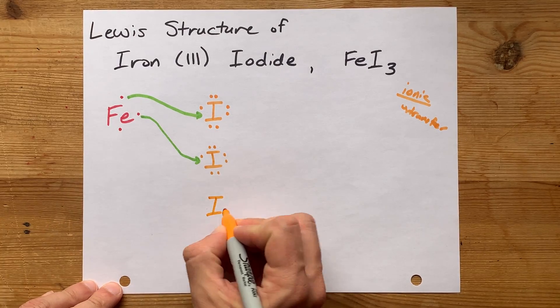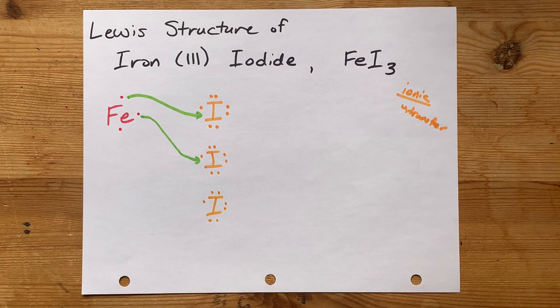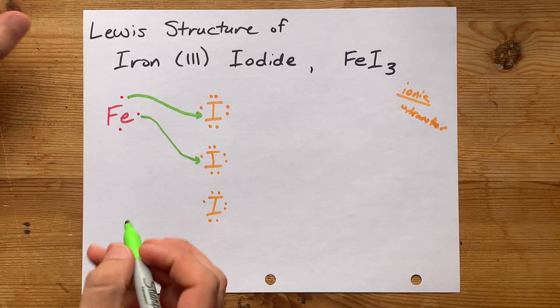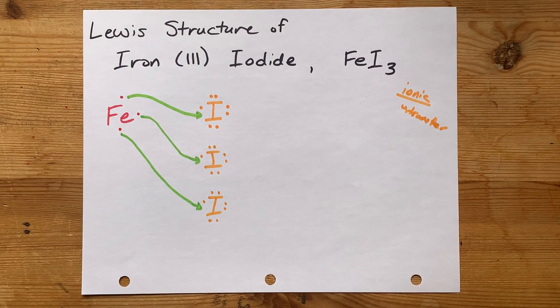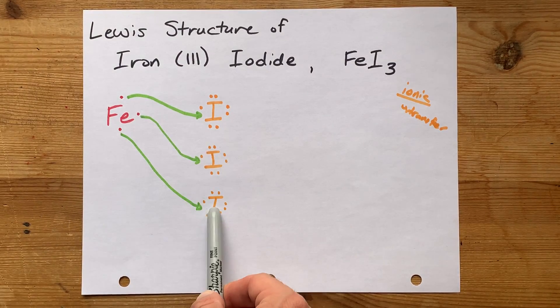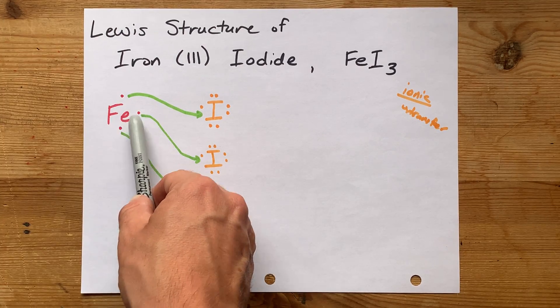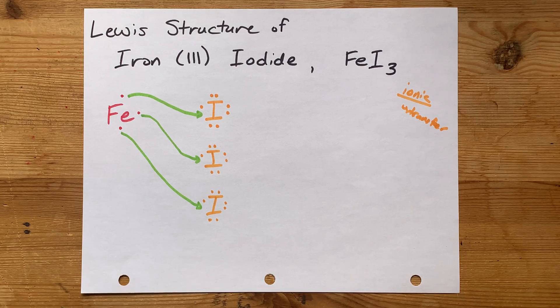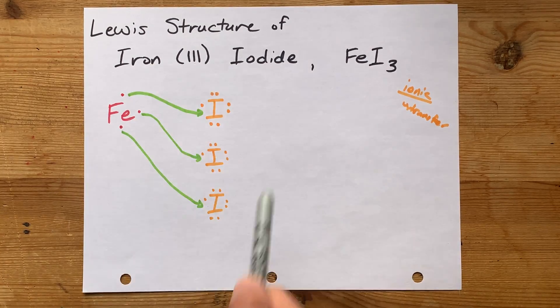And then, like DJ Khaled says, another one. Another iodine short 1 electron from its own complete octet accepts 1 electron from the iron. By using 3 iodines to accept 1 each of iron's 3 valence electrons here, we end up with FeI3, or iron 3 iodide.